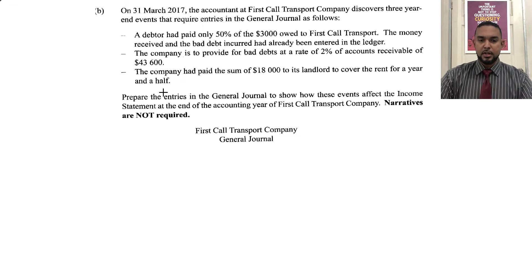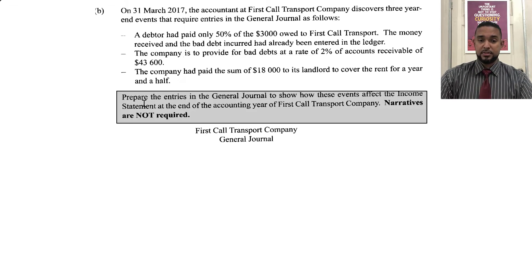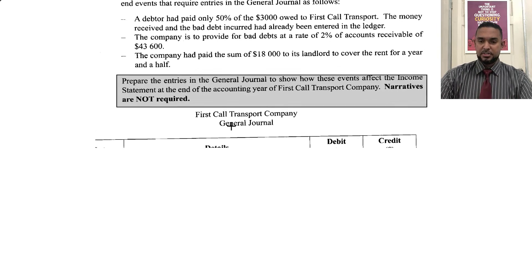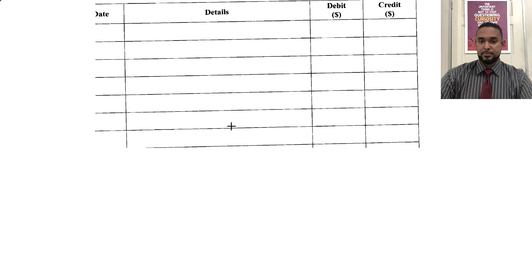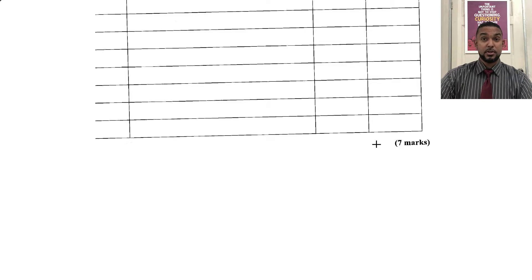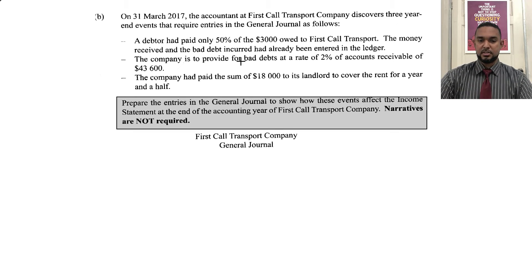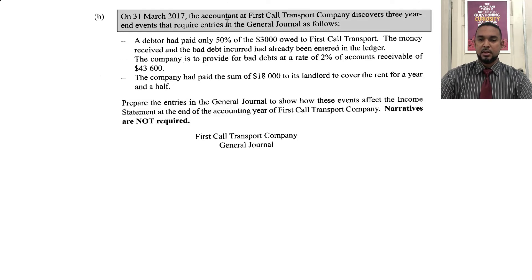The last part of this question: they want us to prepare entries in the general journal to show how these events affect the income statement at the end of the accounting year. Narrative is not required. It's seven marks for this question, which means you're spending about a minute and a half per mark — about 10 to 10 and a half minutes. Going back up to the information: on 31st March 2017, the accountant at First Gold Transport Company discovers three year-end events that require entries in the general journal.